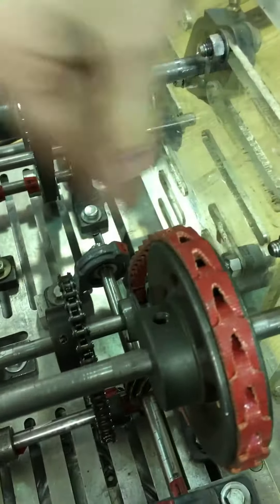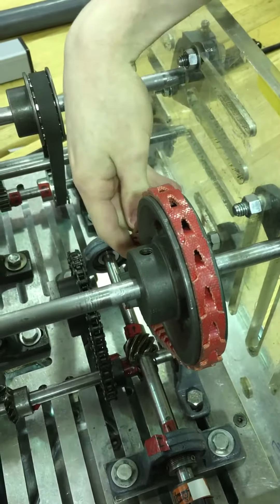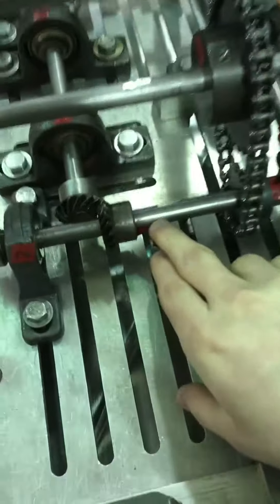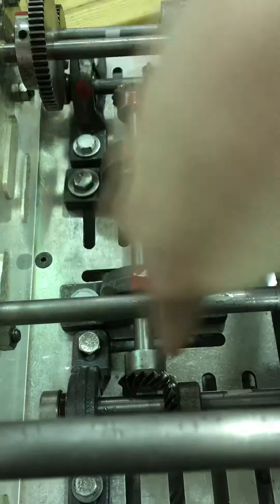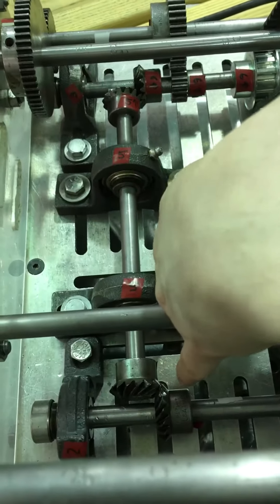And shaft three drives shaft four through a belt drive. Back to shaft two, we've got shaft two driving shaft five through a pair of right-angle miter gears.